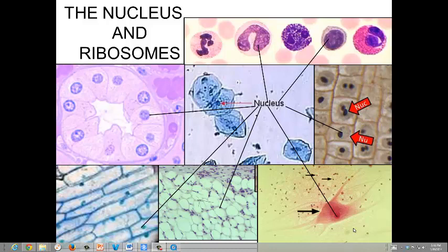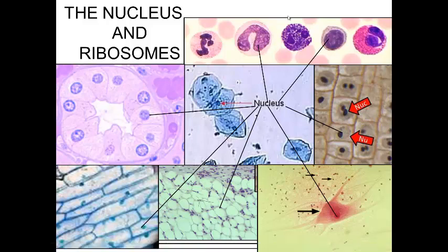Here we see several examples of eukaryotic cells with their nucleus. The first up at the top are these white blood cells. White blood cells are unusual in that they have multi-shaped nuclei. These are very lobed in appearance. This one over here is very large and takes up most of the volume of the cell.